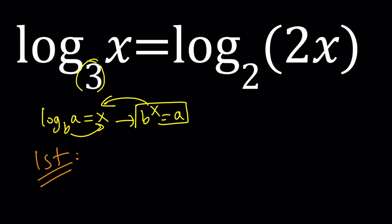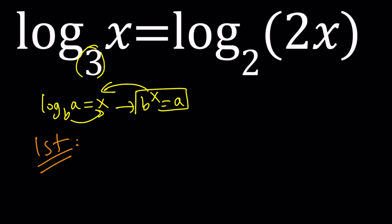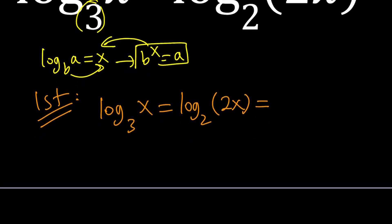For my first method, I'm going to set both of these equal to something. I'm going to use substitution. Substitution is awesome, solves a lot of problems, simplifies things. Since they are equal, we can set them equal to the same thing. Let's say both of these are equal to y. And from here, by using the definition twice, you first get 3 to the power y equals x, and then you get 2 to the power y equals 2x.